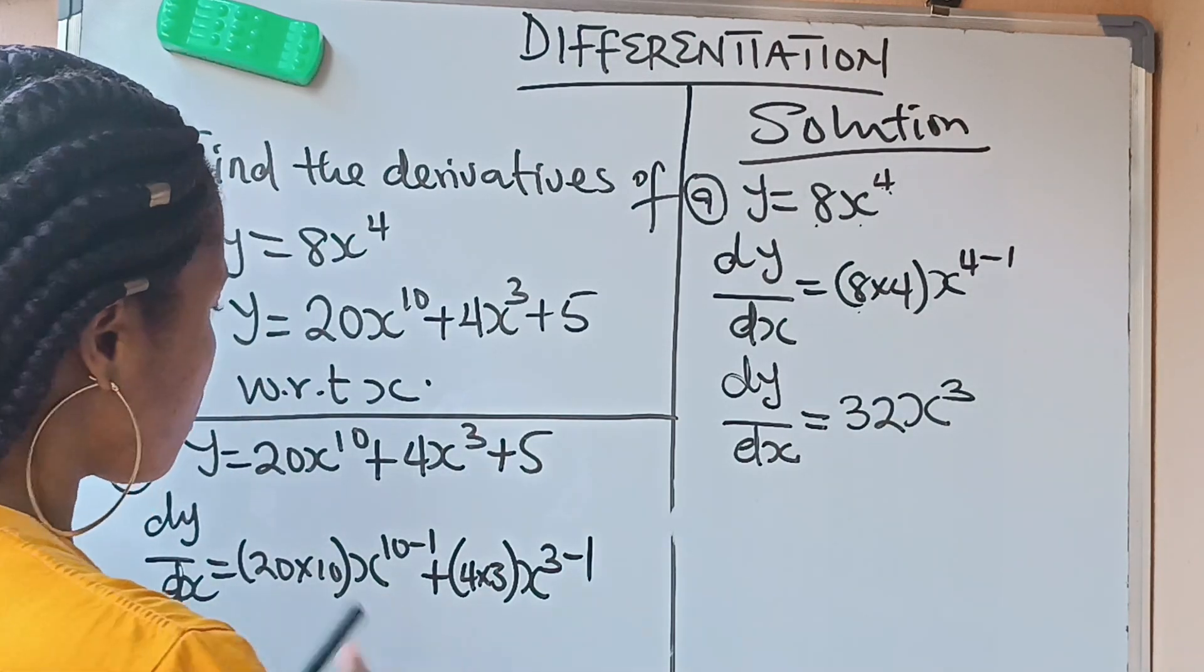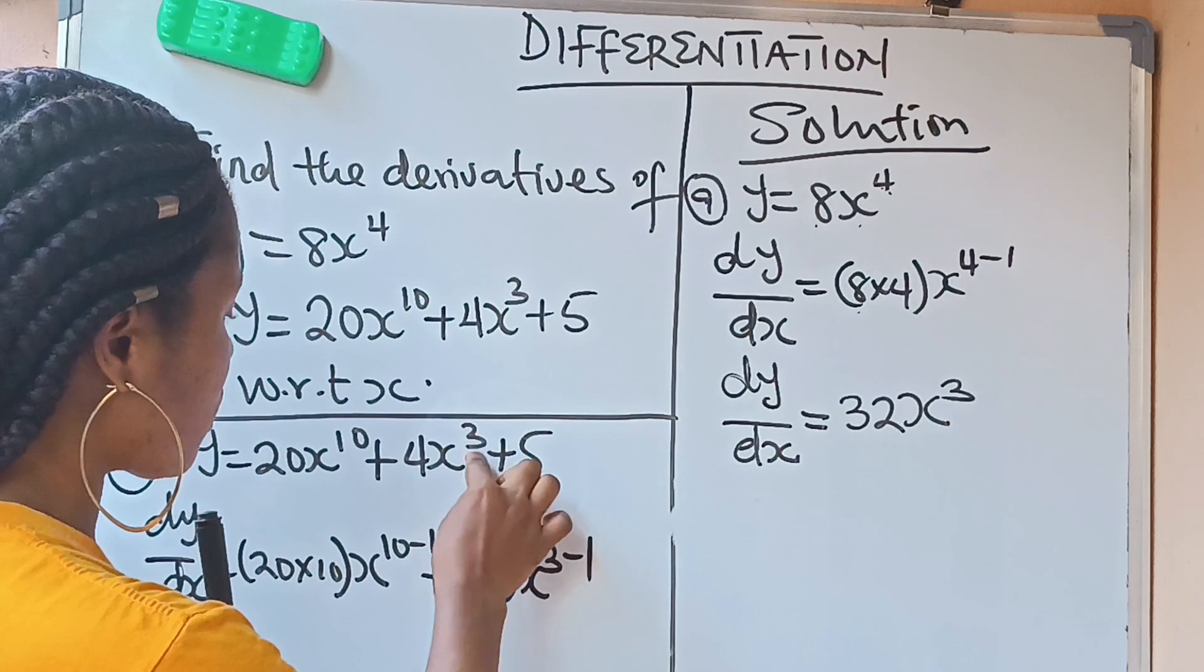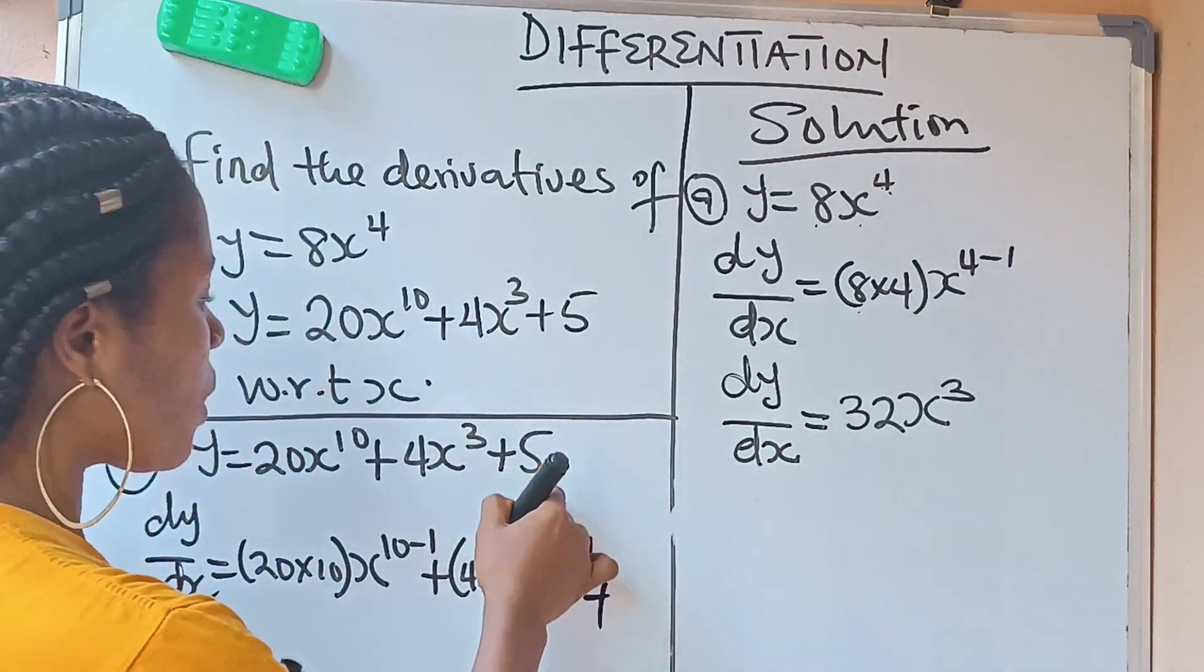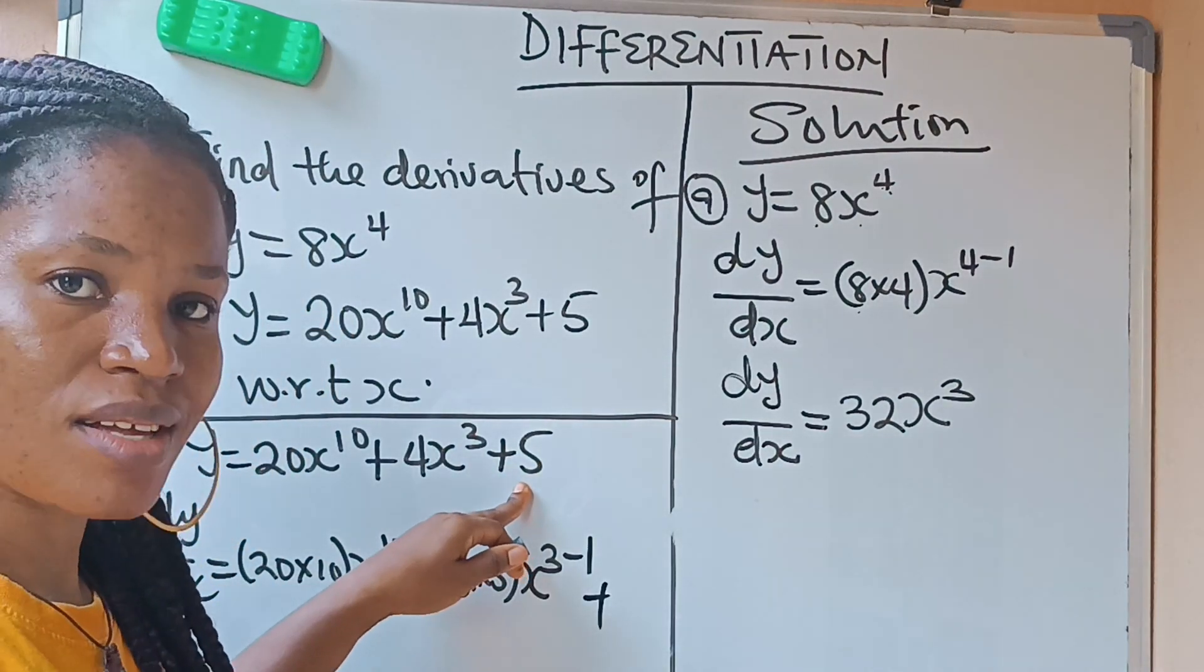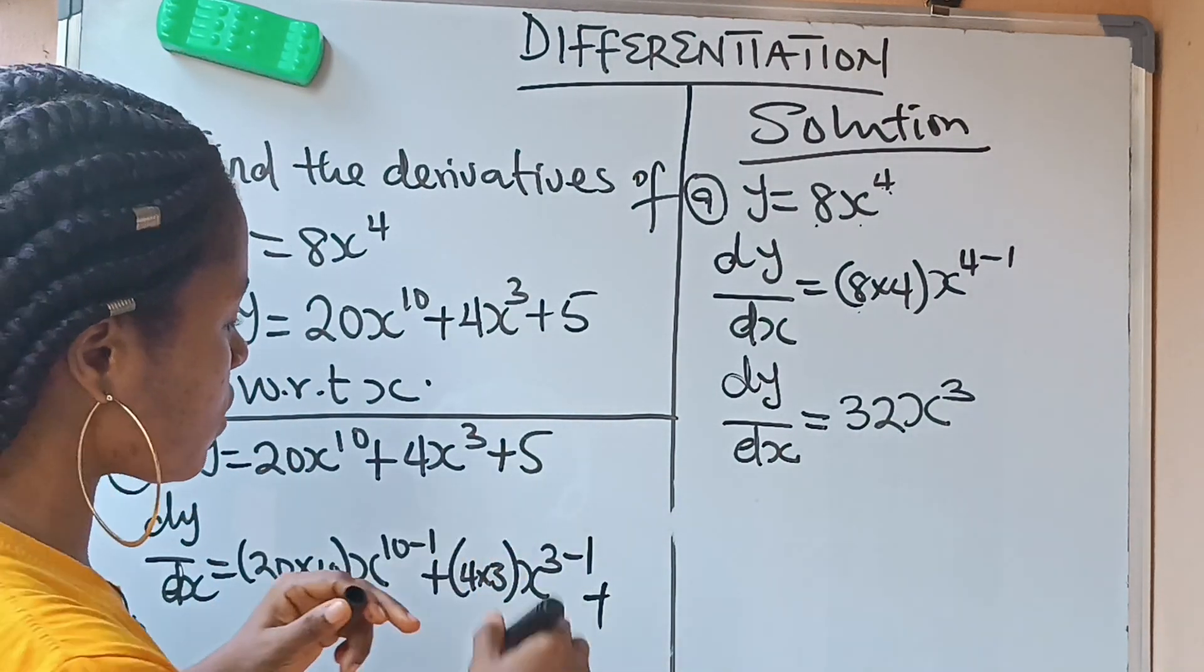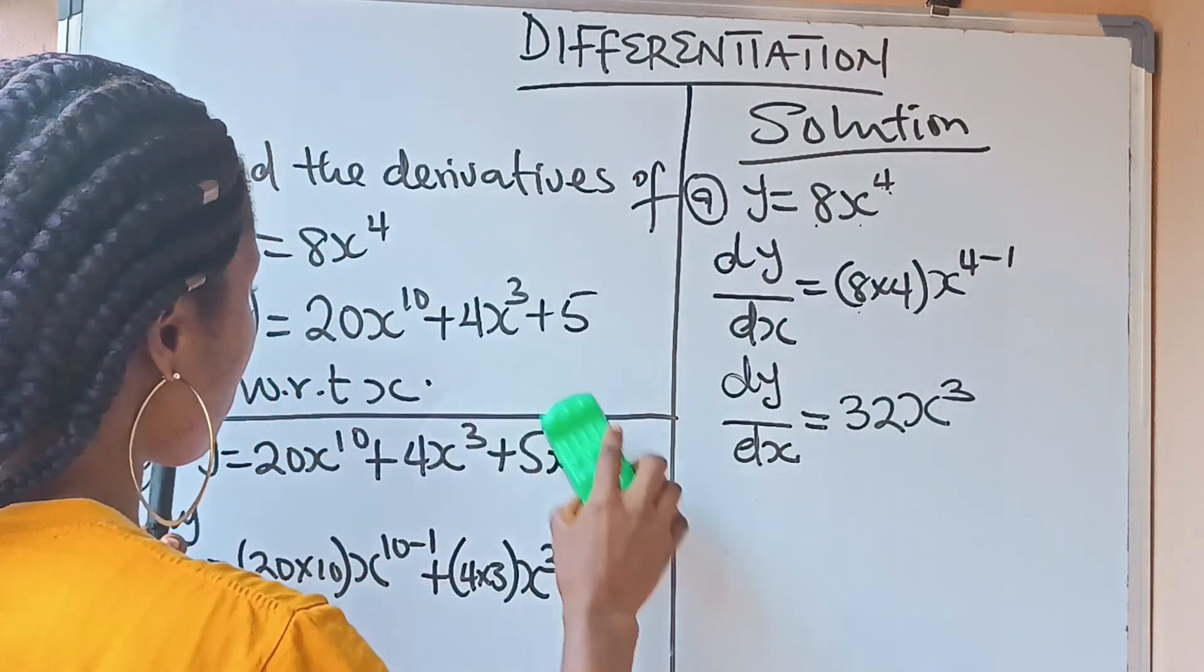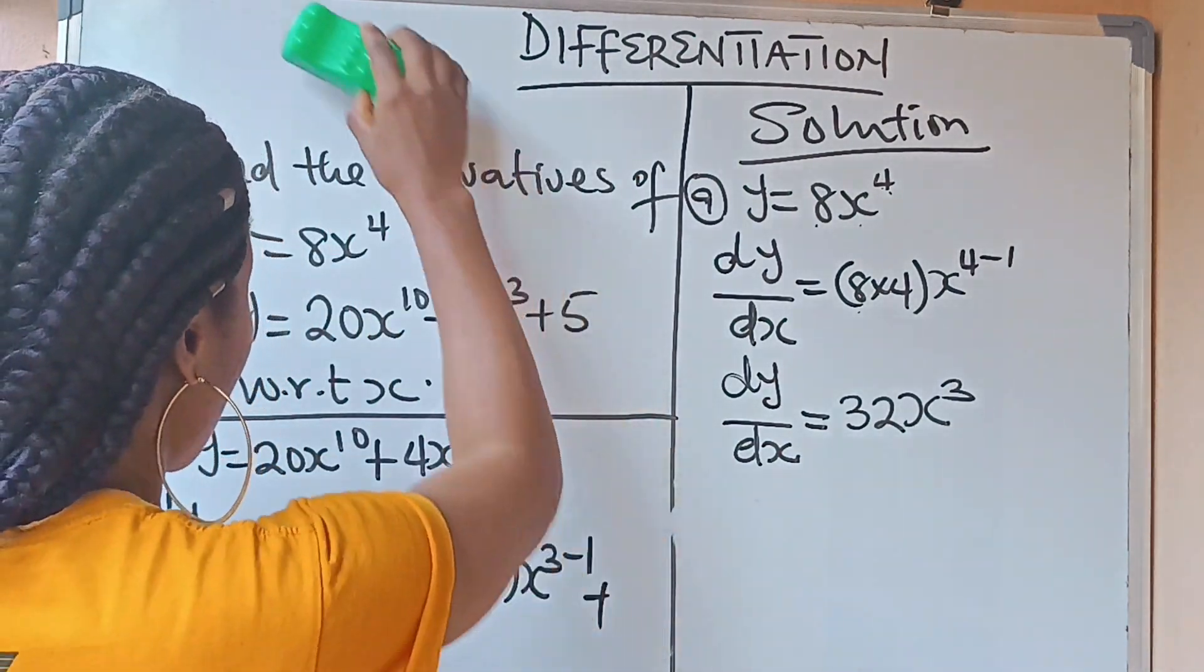You understand? 4 times 3. You write your 4 times 3. Write your x. Then write your 3 and subtract 1. That is it. Plus, but once you have a constant, the derivative of any constant is 0. That is 5 because it is a constant because it doesn't have any variable which is x or y. Any variable at all.